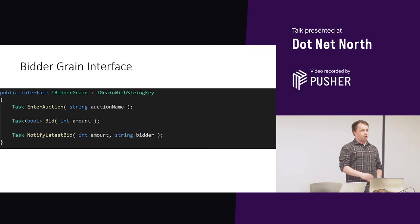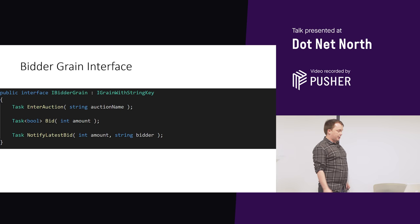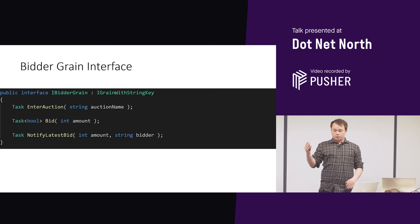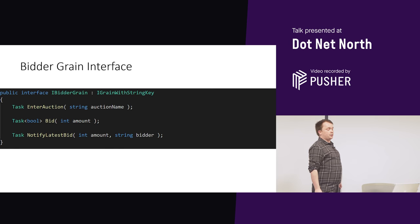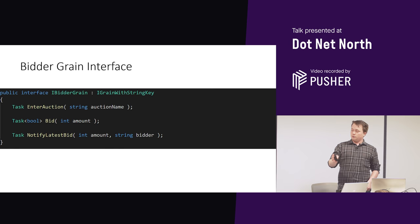At the top here we have our interface — IBidderGrain — it's our contract to our actor. If we want to make the actor do something, either an ask where you're asking for something, or you're telling it something, we have to go via these. We have IGrainWithStringKey. There are a couple of interfaces that Microsoft packages into their Orleans framework — IStringKey, IIntKey, IGUIDKey. There are some compound keys as well.